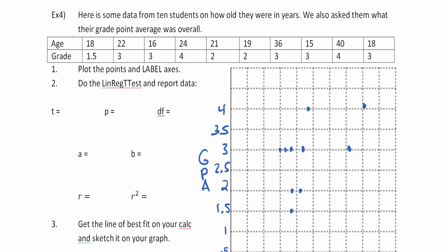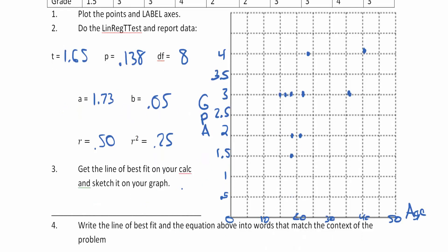Let me write down the important information. The test value was 1.65 rounded; the p-value is 0.138; degrees of freedom is 8 because we had 10 students and 10 minus 2 is 8. The a value — the y-intercept — is 1.73; the slope b is 0.05; the r value is 0.50 — 50% — and r-squared is 0.25.